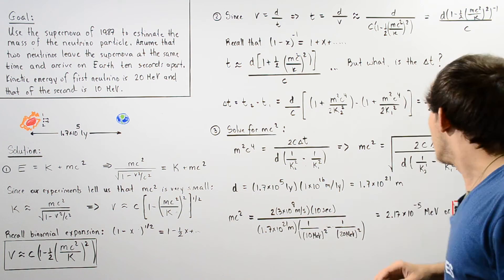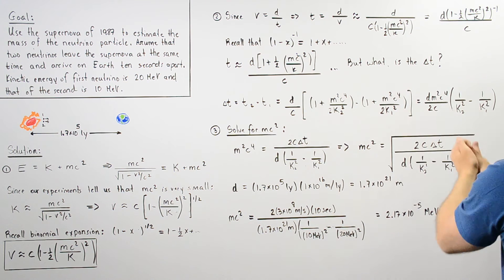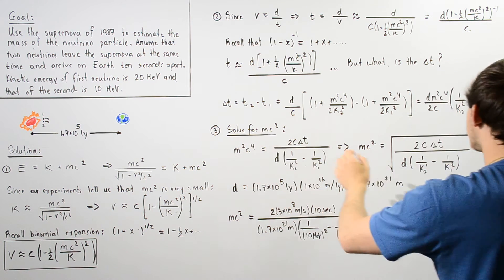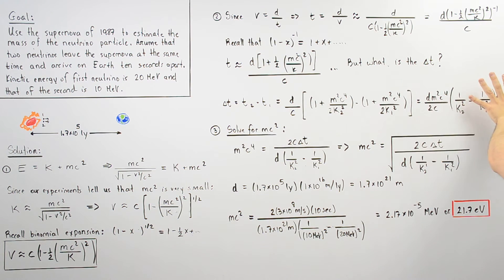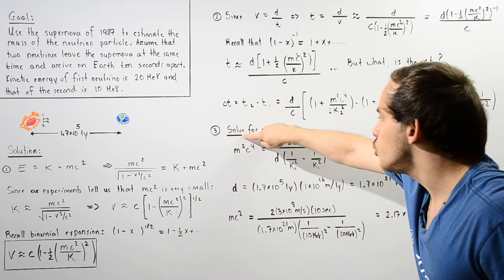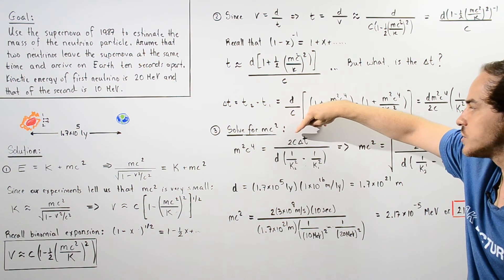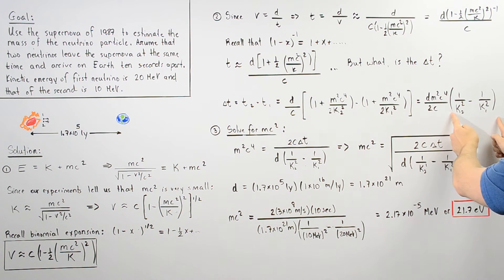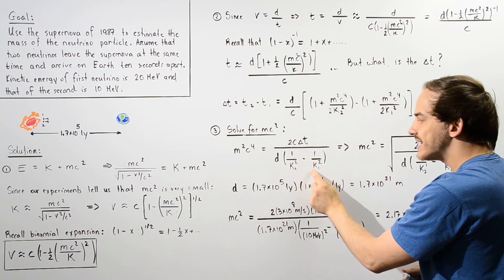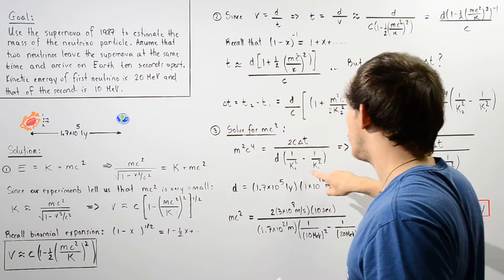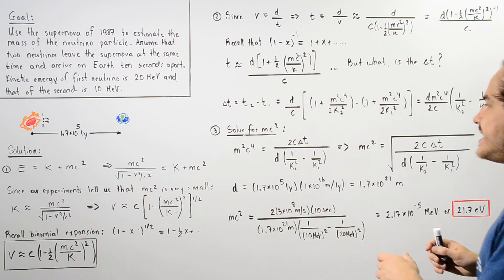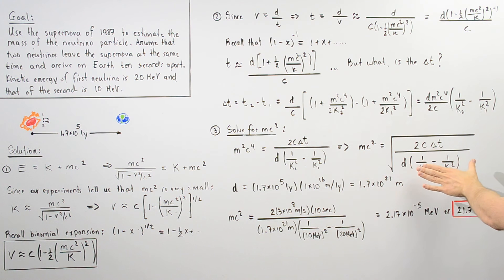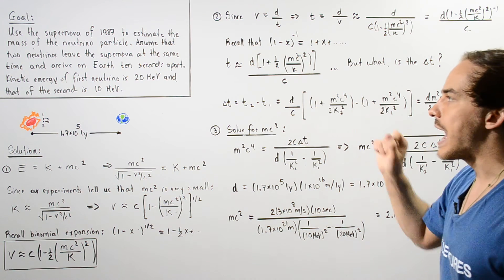In step 3, we take the delta-t equation and solve for mc², the rest mass energy. Rearranging, m²c⁴ equals 2 times c times delta-t divided by d, multiplied by (1/K₂² minus 1/K₁²), where K₂ is the kinetic energy of particle 2 and K₁ is the kinetic energy of particle 1. Taking the square root of both sides gives us mc², so we can now solve for our rest mass energy.